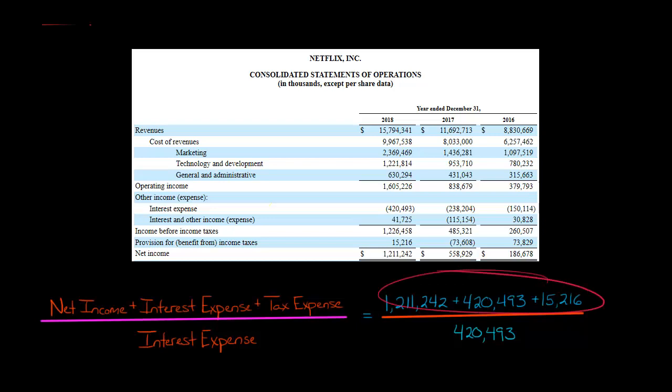That's our numerator under option number one way of calculating this. Then, we're going to divide by the interest expense, which we've already calculated. We've got that right here. So, if you do that, you get to a times interest earned ratio of 3.92.